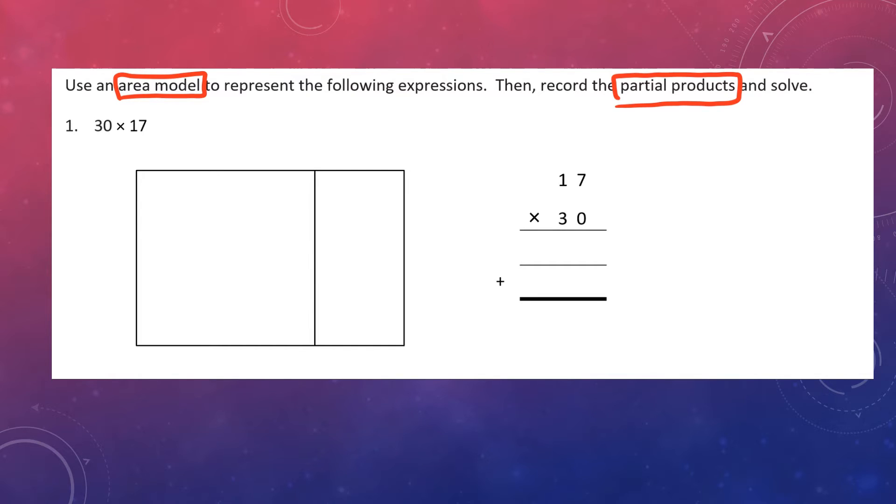The number we are working with is 30 times 17. What we are going to do is break apart the values in these numbers and label the box. On the side of the box, we see it is not split, it is just all one, so we are looking for a number that only has one value. In this problem, that is 30. There is no value in the ones, but there is a value in the tens of 3, so I can put 30 over here.